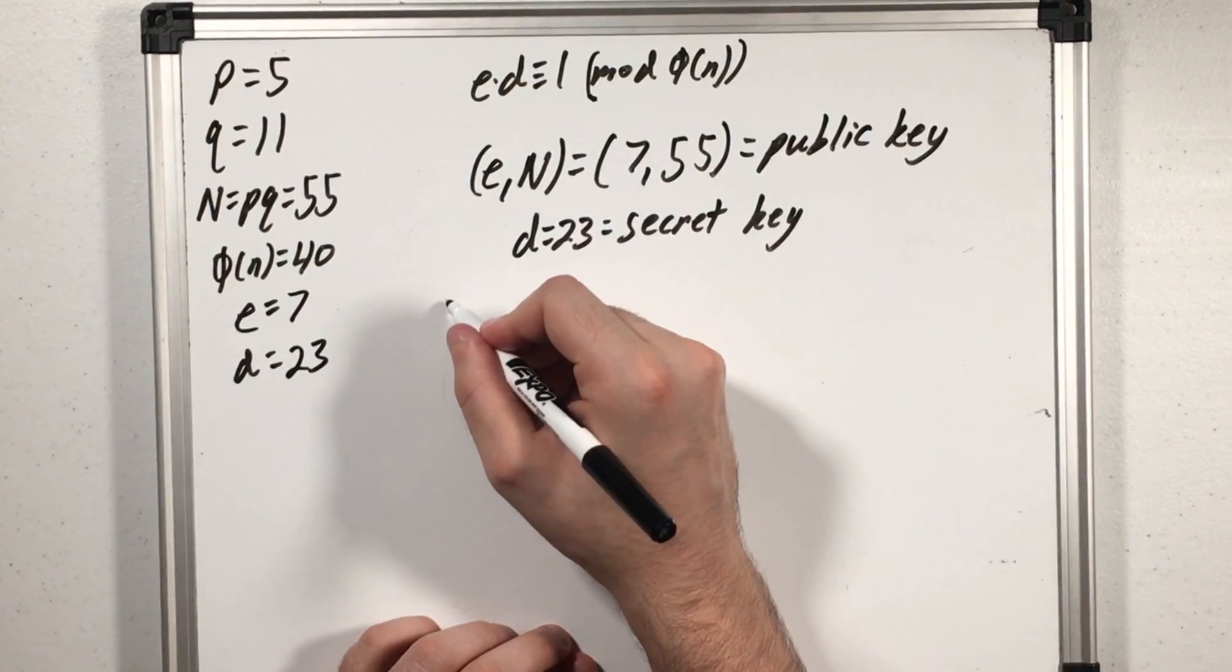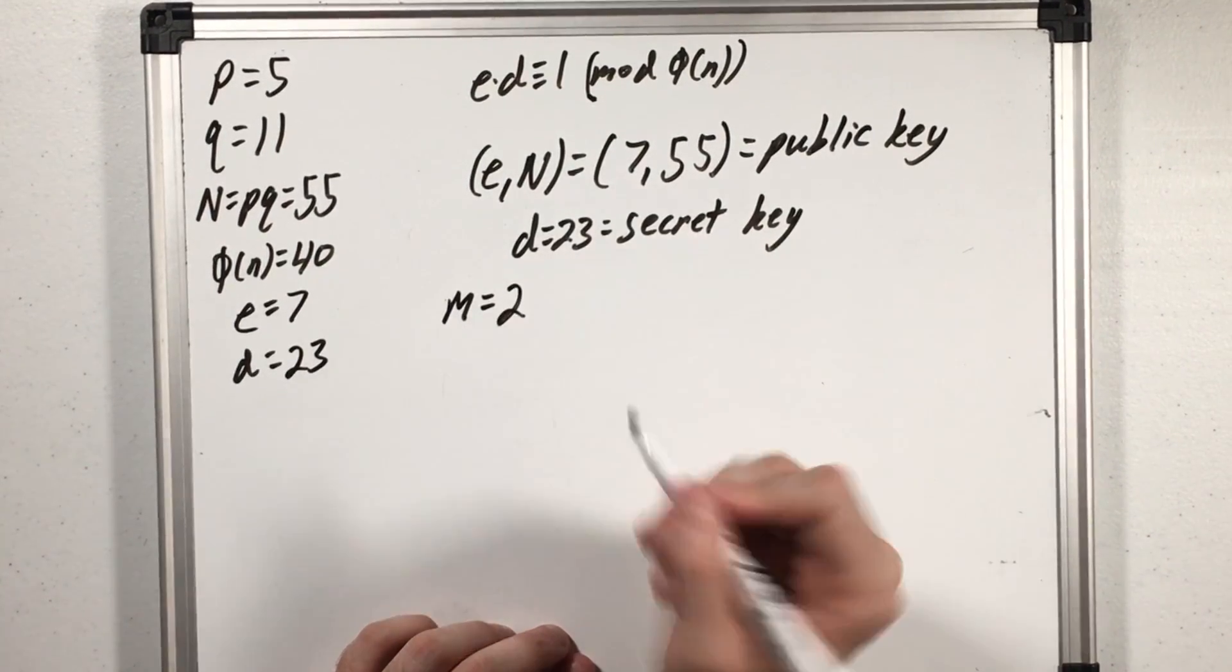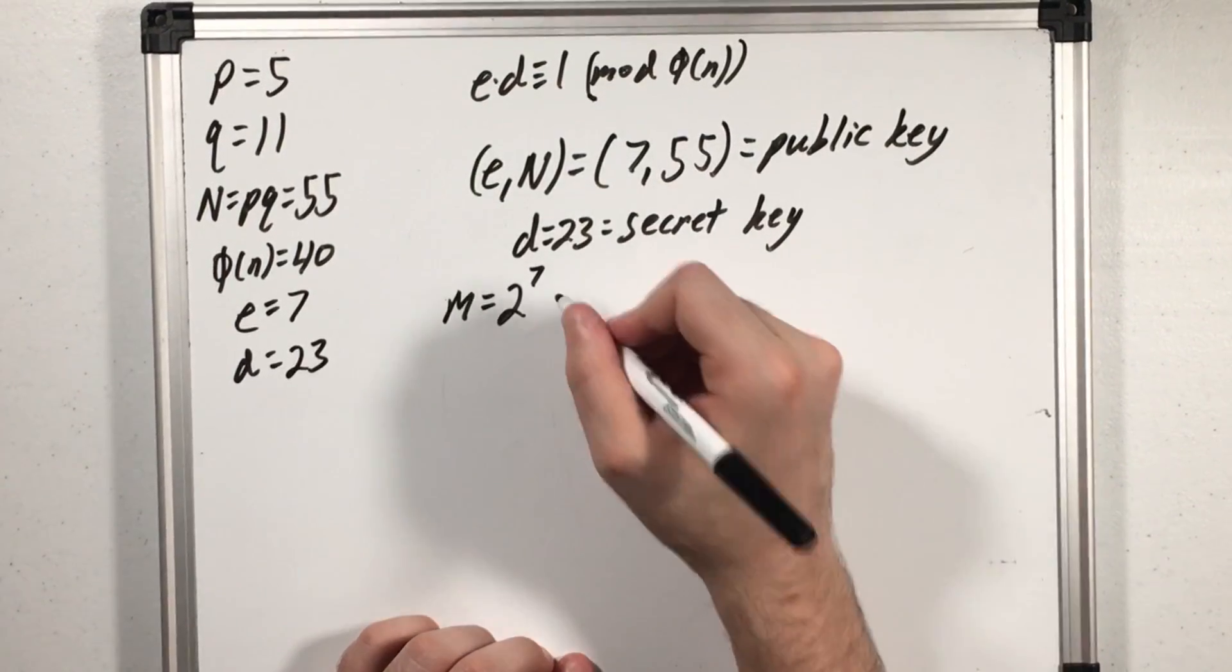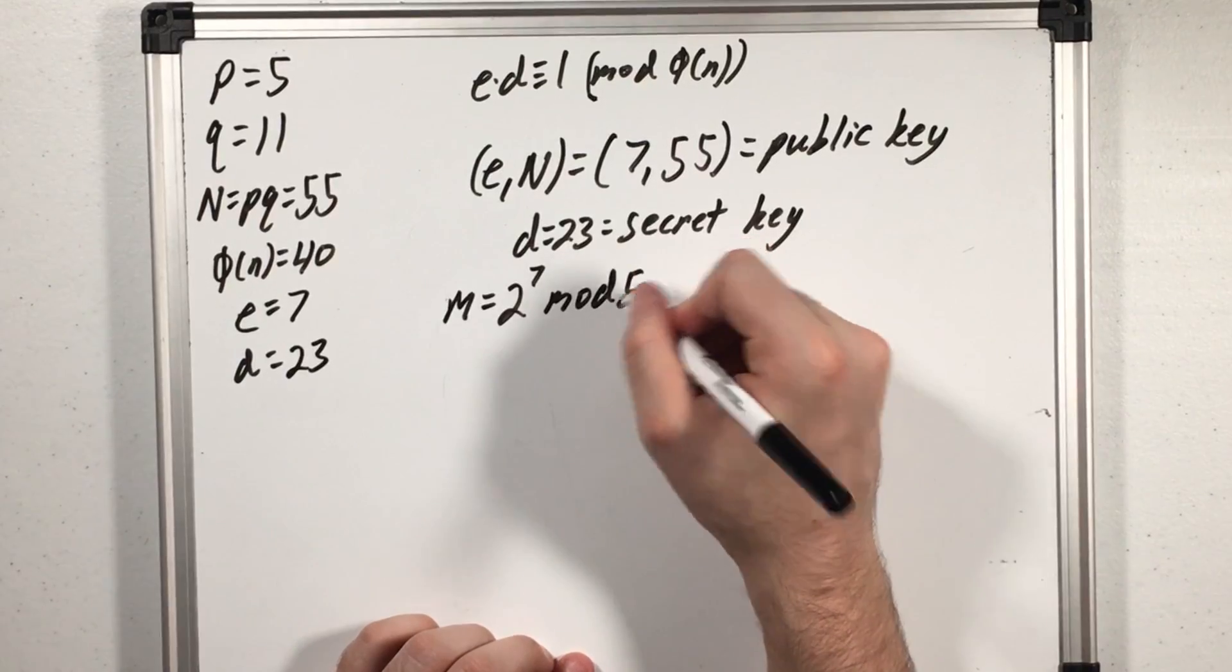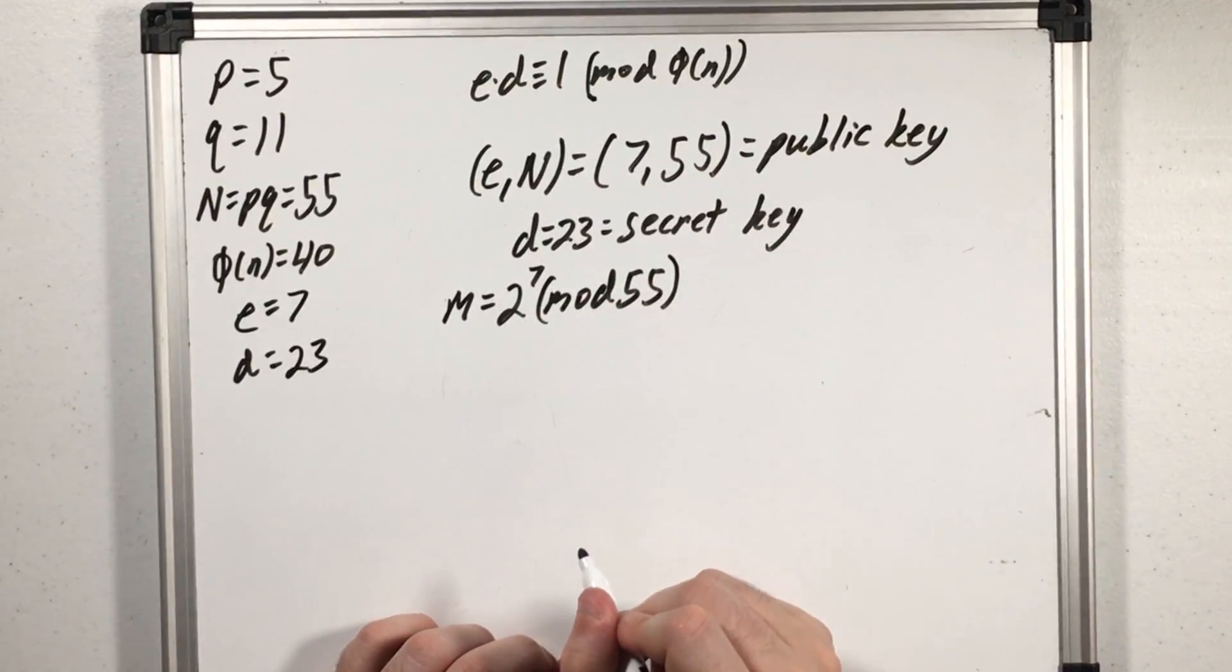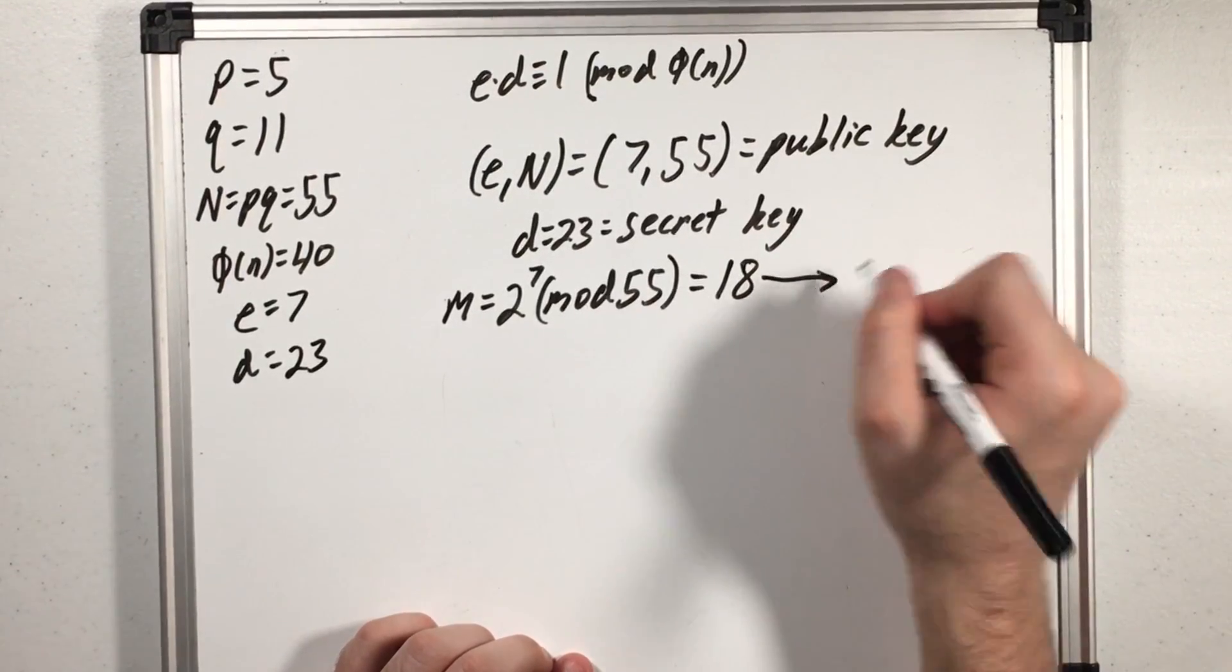Then when someone wants to send me some message m they convert that to some number, which there are ways to do, we'll choose 2 in this case. And they raise that to the e power mod n or in our case 55. Because remember both these are public information. They calculate this and get 18 and that's the value they send me.